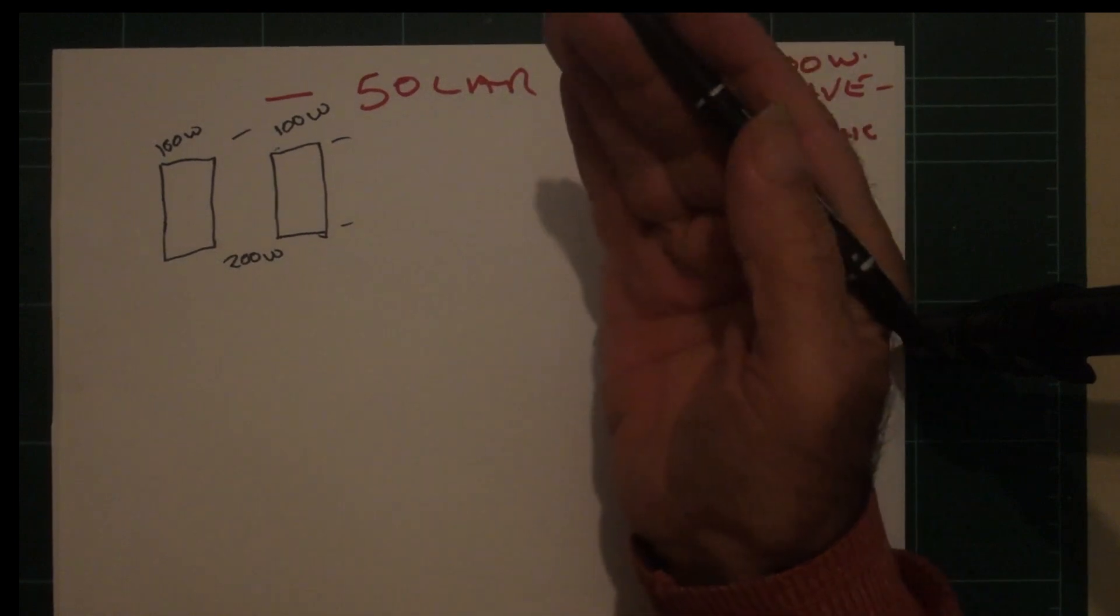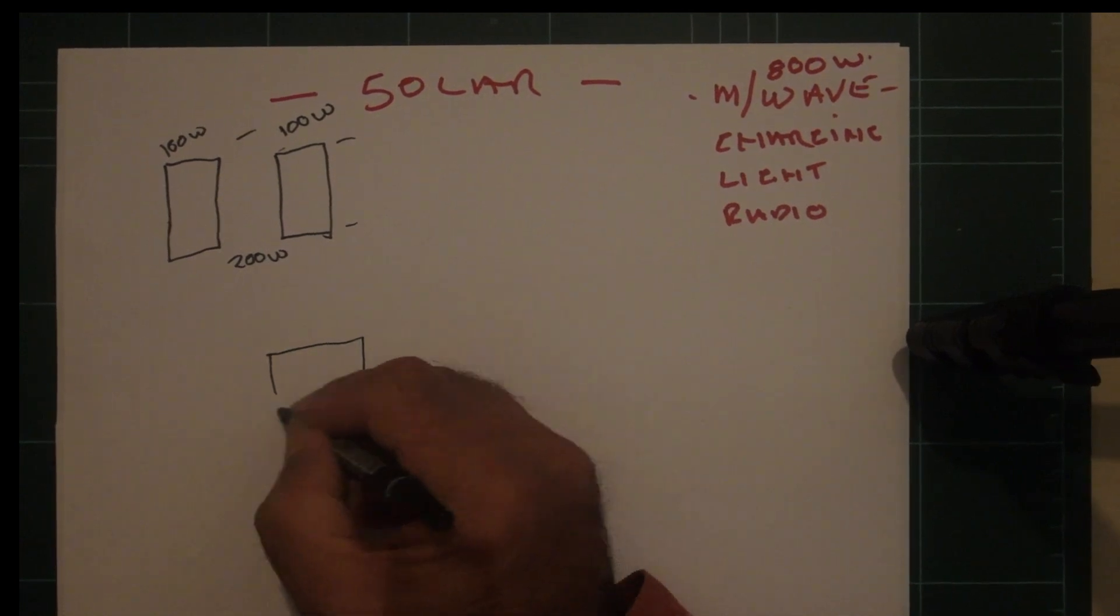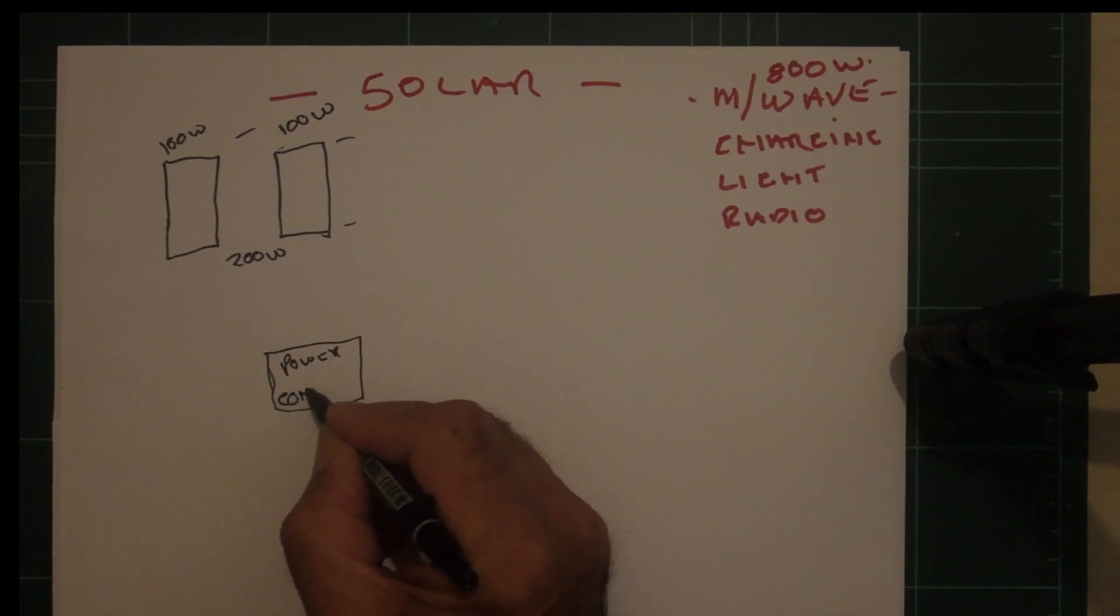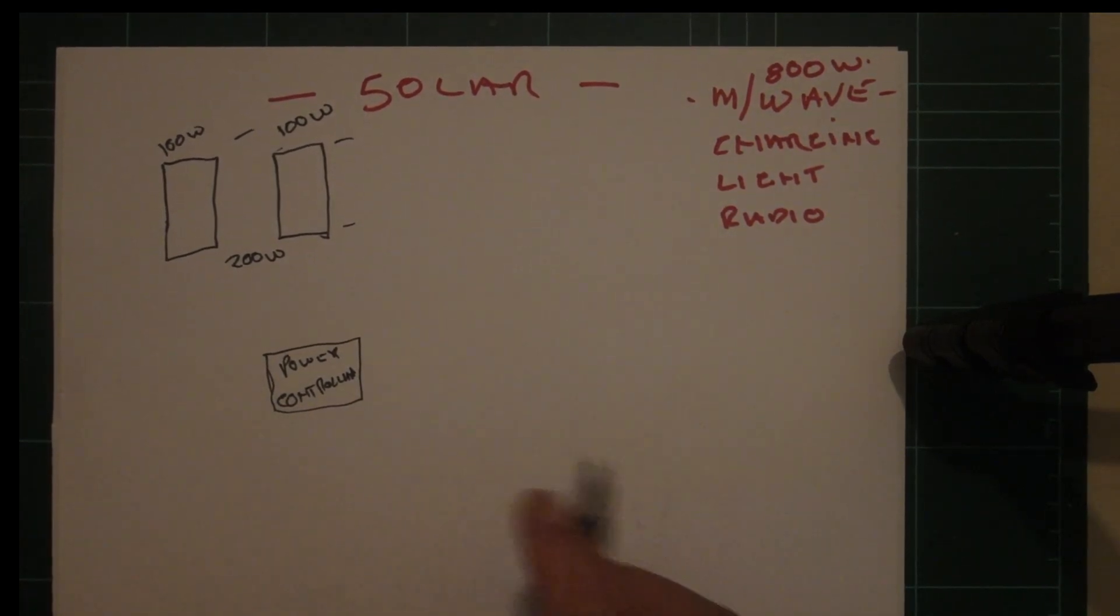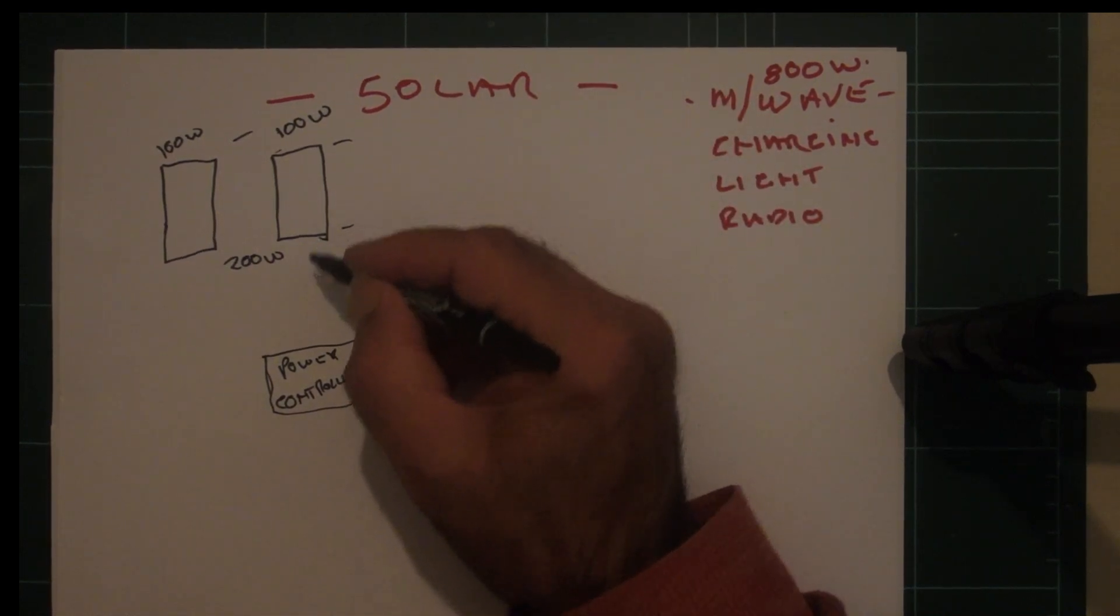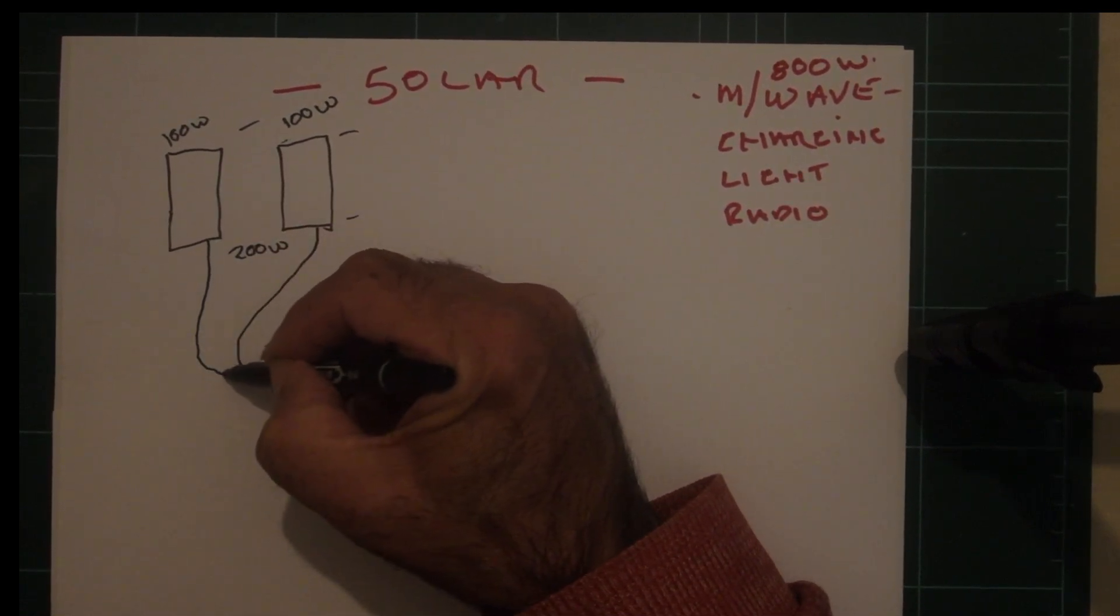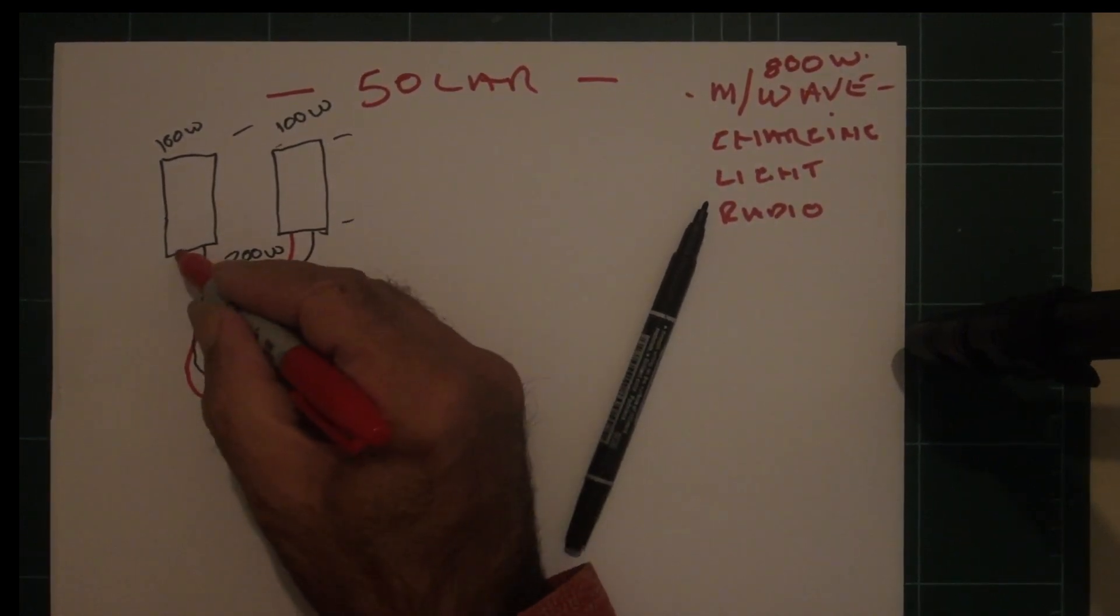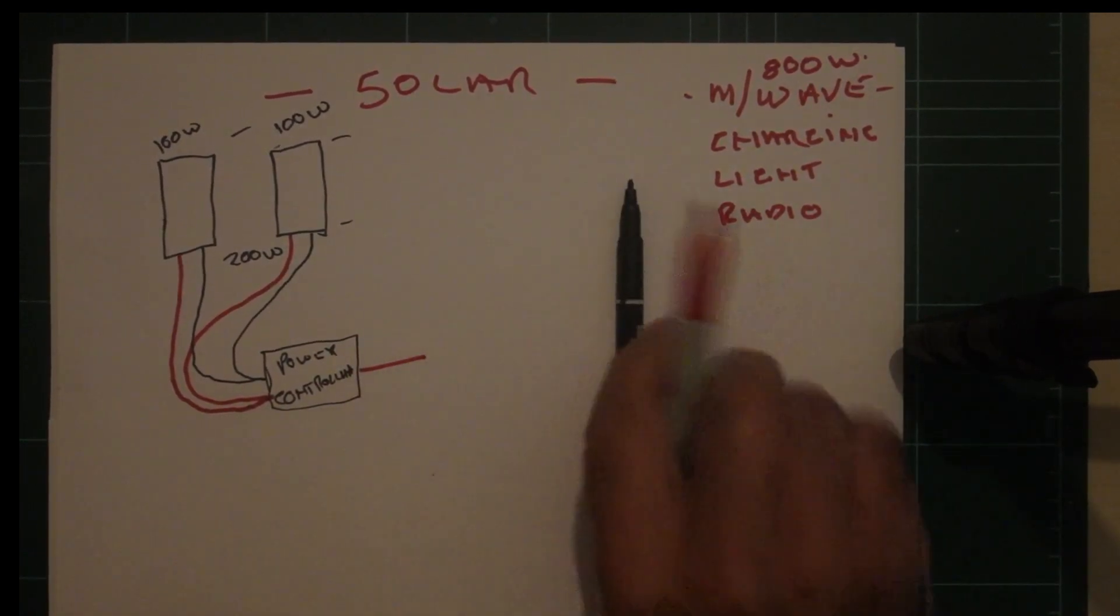Then, if I'm correct, you need a power controller. Apparently there's two types of power controllers, which I'm not quite sure about. What you would do is run your solar panels into the power controller, and then you would get a voltage out.